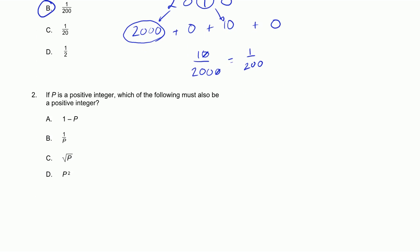Problem 2. If P is a positive integer, which of the following must also be a positive integer? Choice A, 1 minus P. Well, if P was 2, 2 is a positive integer, then 1 minus 2 would be equal to minus 1. This is not a positive integer. This is a negative integer. So it can't be A.